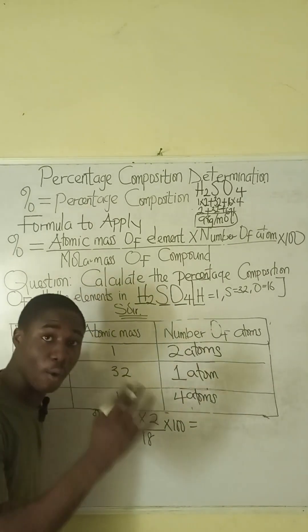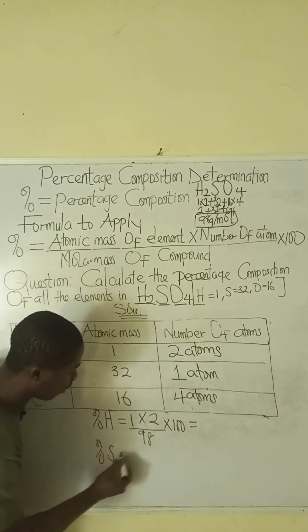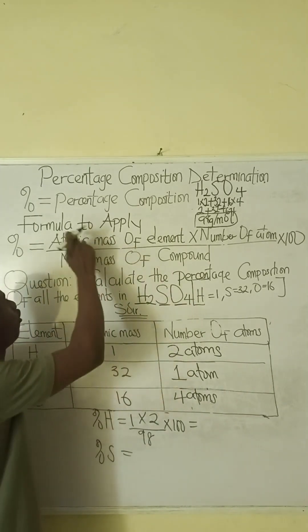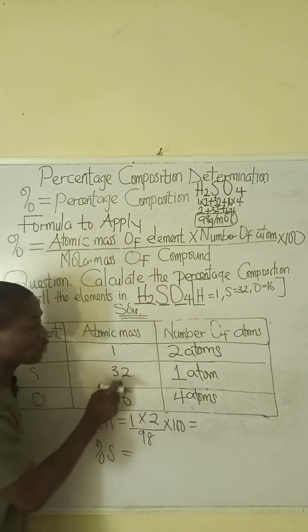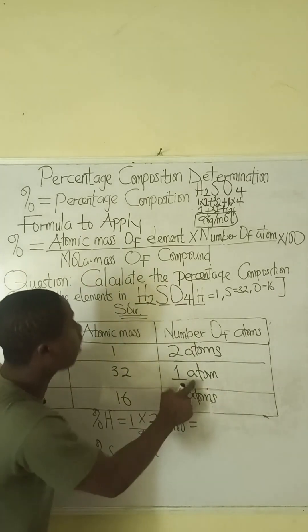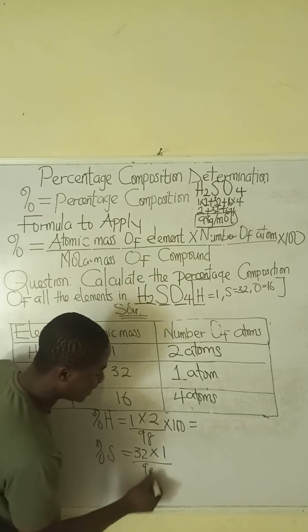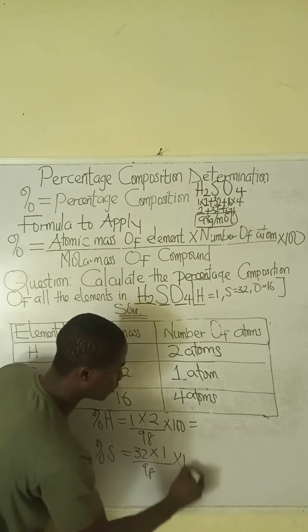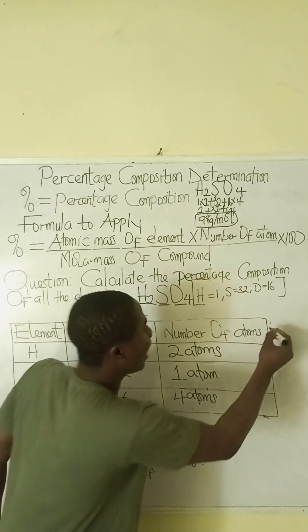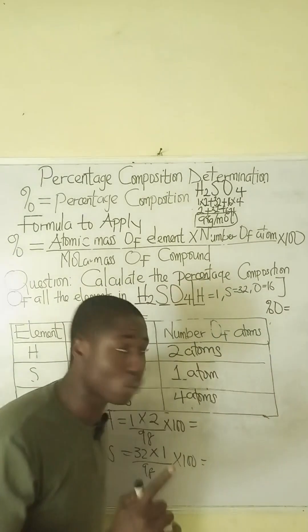Percentage composition of sulfur = (atomic mass of sulfur × number of atoms of sulfur) / molar mass × 100 = (32 × 1) / 98 × 100.